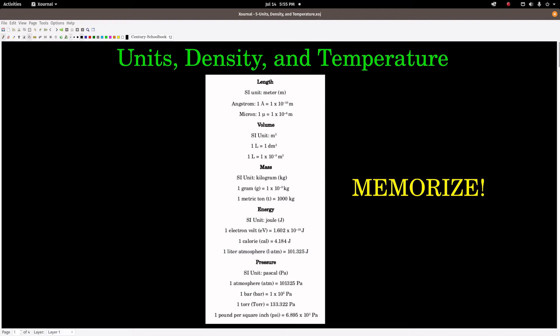We'll start with units. This table gives you the SI units that we use, some common ones anyway. The SI unit of length is the meter, symbol is m, little m. There are some other commonly used units of length in chemistry. An angstrom, with this symbol, is 1 times 10 to the minus 10 meters, and a micron is 1 times 10 to the minus 6 meters.